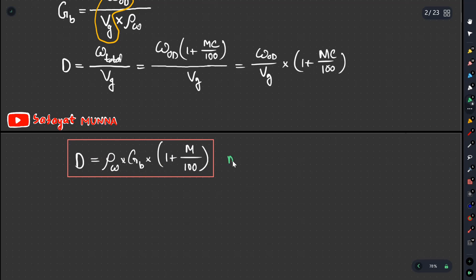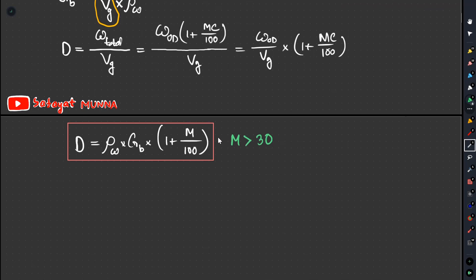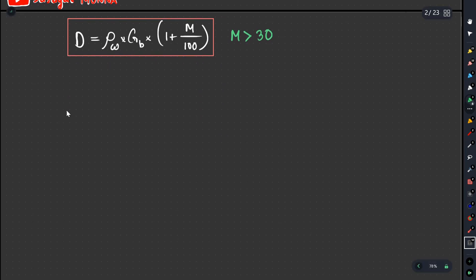The formula is applicable when moisture content is greater than 30. When moisture content is greater than 30, we use that formula. If M is less than 30, then we use the specific gravity empirical equation.